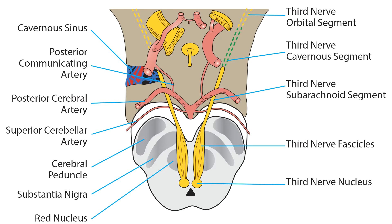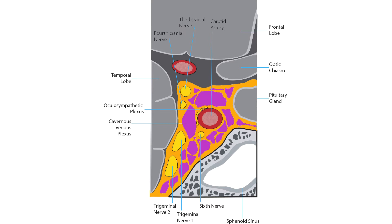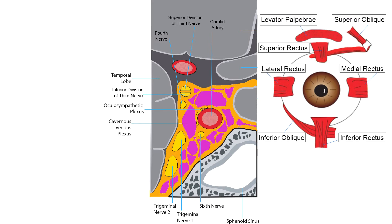The cavernous sinus segment of the third nerve traverses the outer wall of the cavernous sinus to reach the orbit, lying within the dorsal portion of two dural leaves. As it traverses the cavernous sinus, the nerve splits into a superior division supplying the levator palpebrae and superior rectus muscles, and an inferior division supplying the medial rectus, inferior rectus, inferior oblique, iris sphincter, and ciliary muscle. The axons destined for the superior division are more vulnerable, so lesions in the cavernous sinus may impair primarily upper lid elevation and superduction.